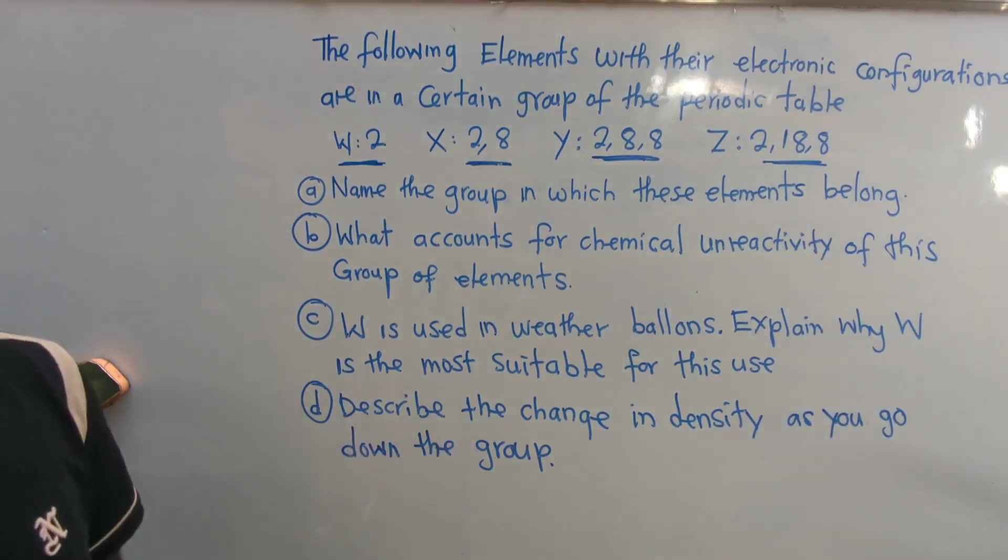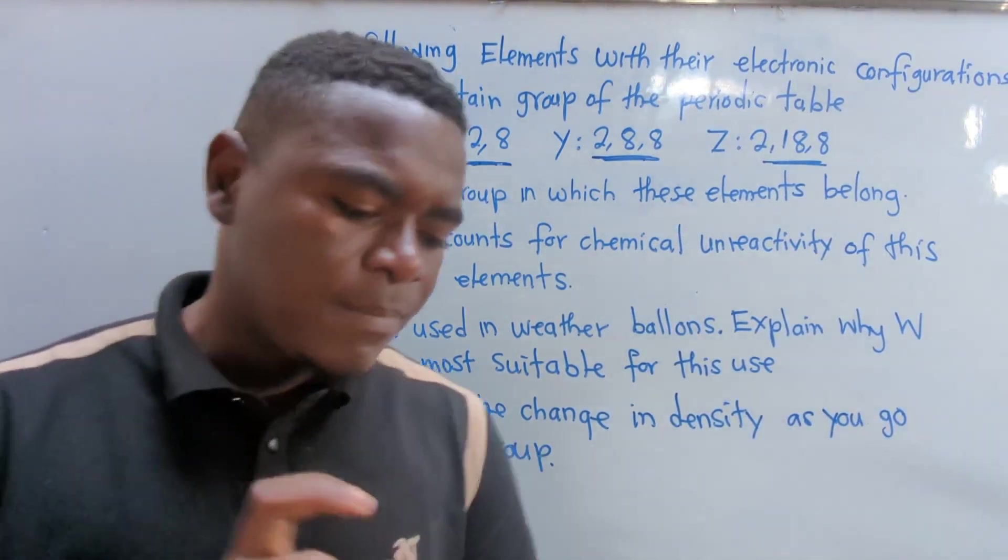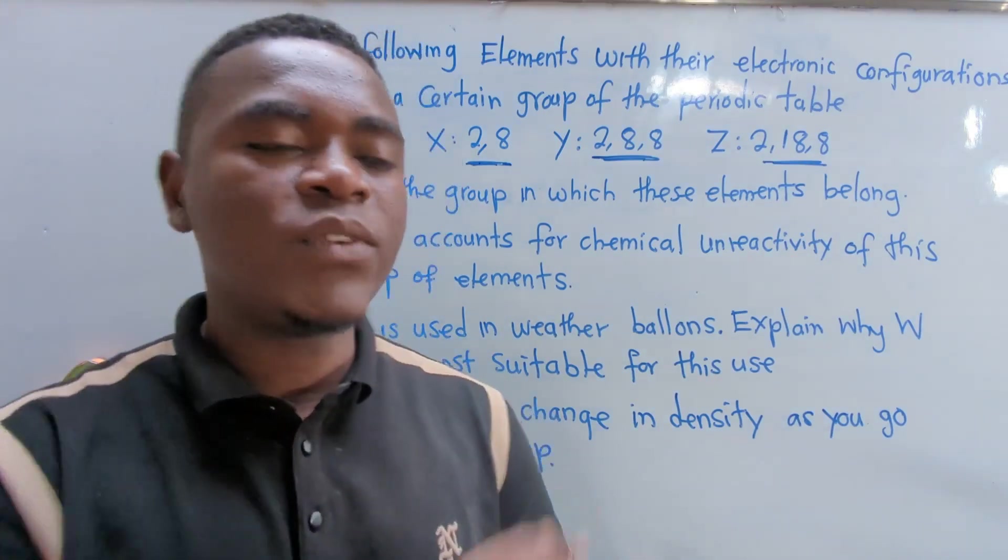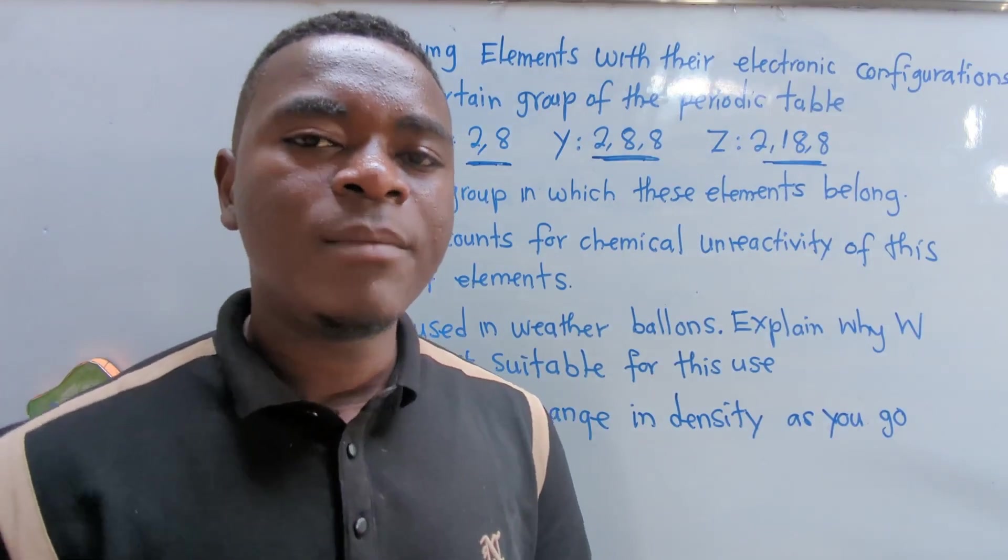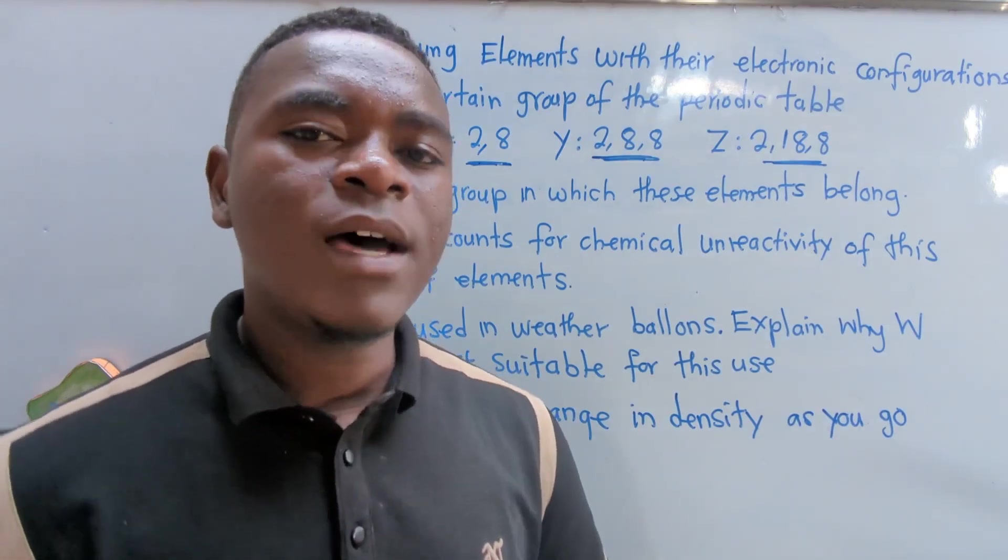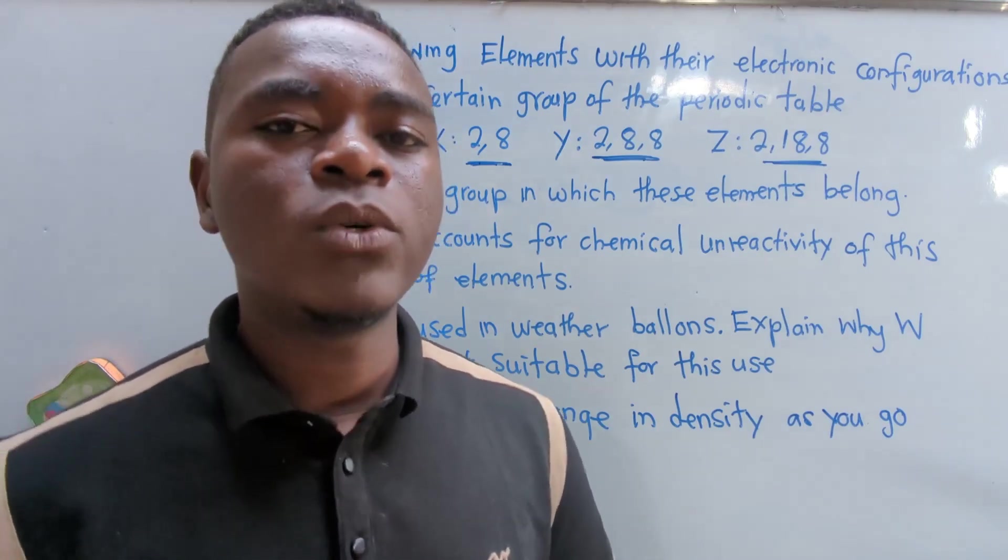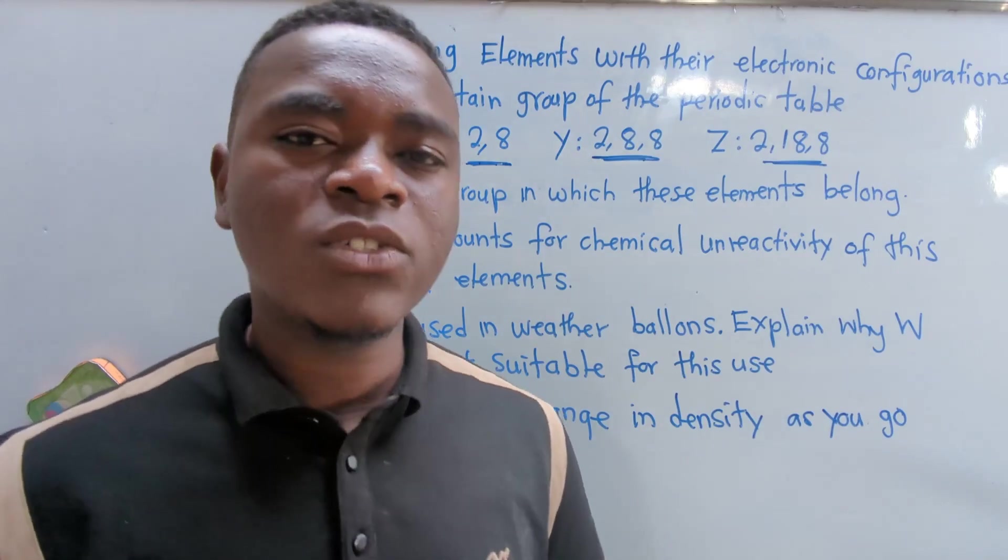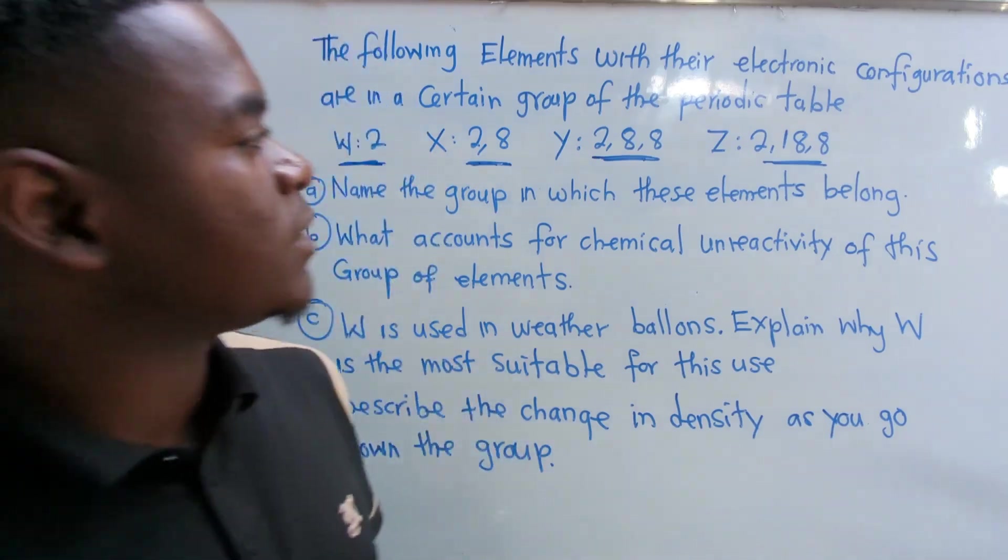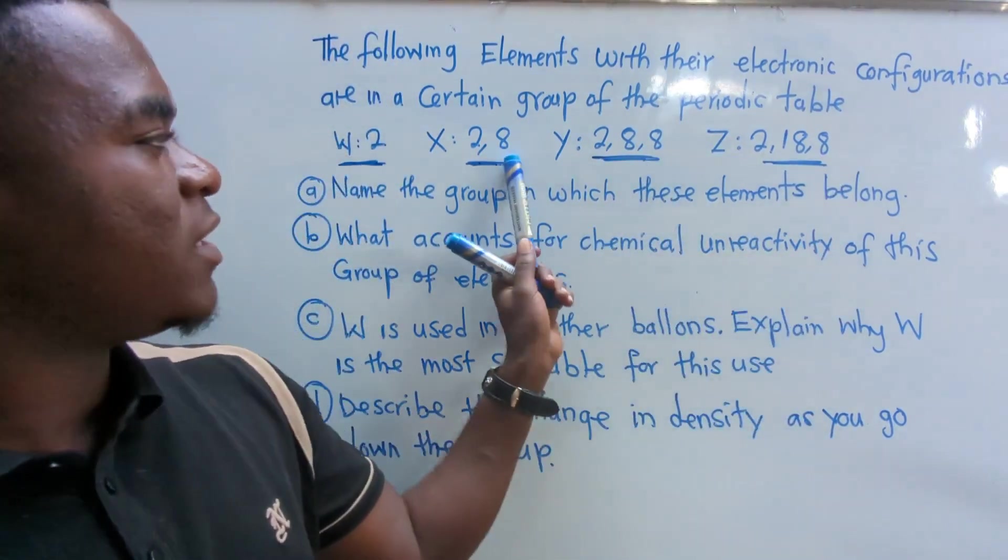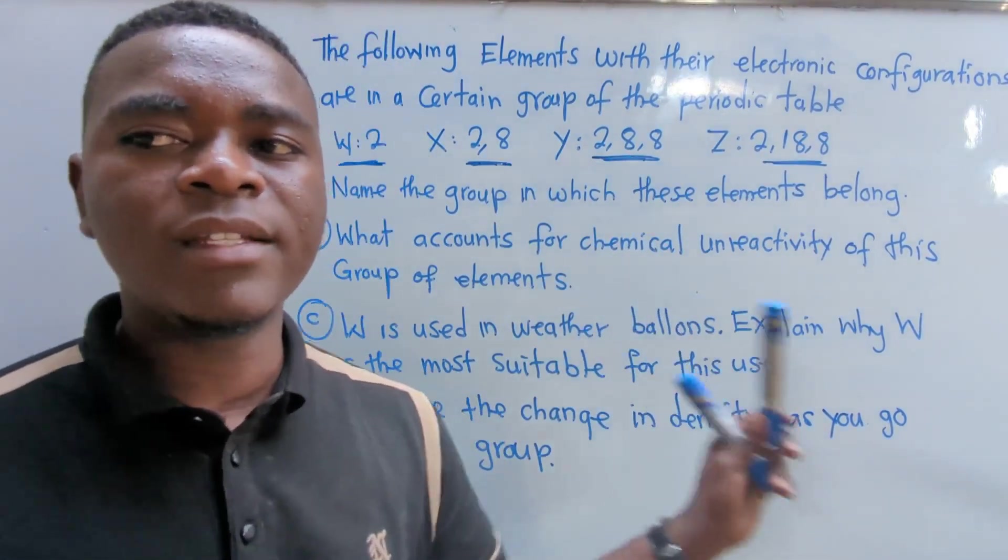So if we were to put these in groups, there is something you need to understand even before we answer these particular questions. I remember telling you that the number of shells would determine the period and the number of electrons in the outermost shell would determine the group. So if you look at this, 8,8,8, the number of electrons in the outermost shell are 8.